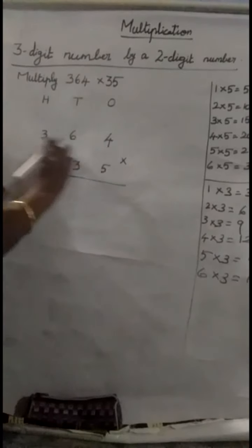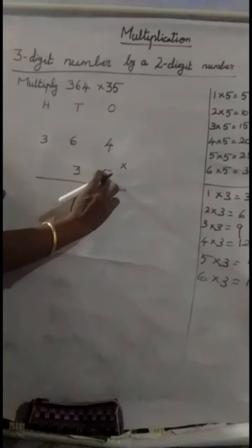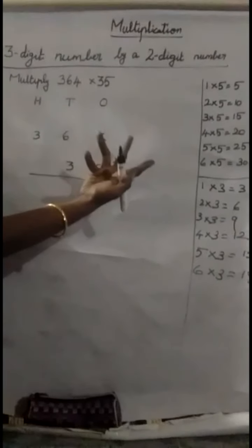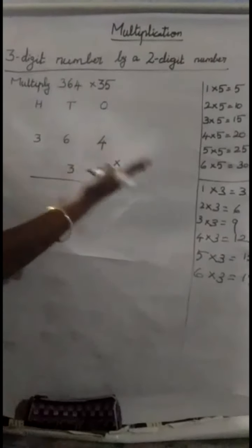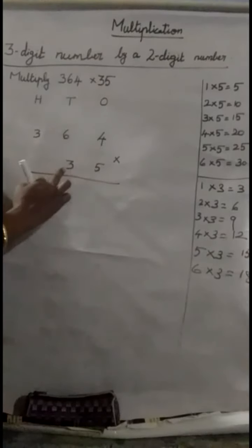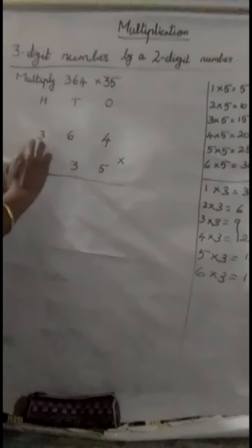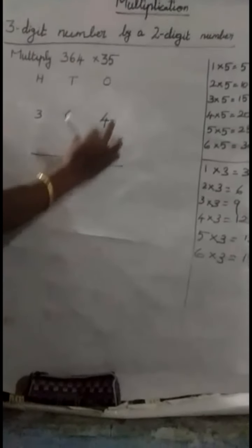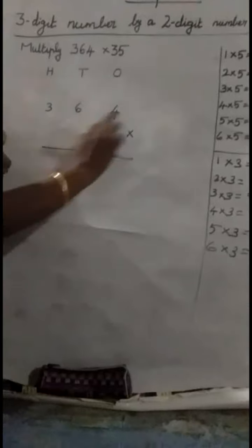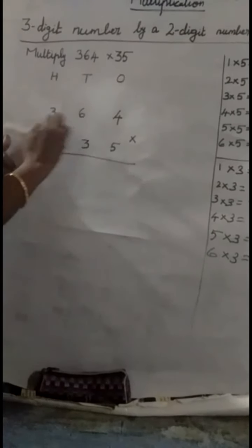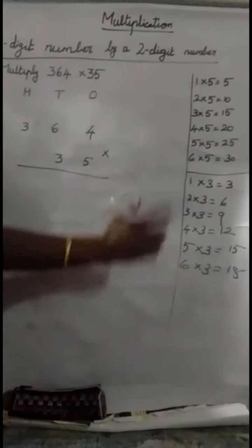See, already you know this is a multiplicand and this is a multiplier. 35 is a multiplier. We don't know 35 tables. So, we can separate the number that is 1s and 10s. First, we should multiply these numbers by 1s multiplier and these 3 numbers by a 10s multiplier. So, we can write the table, 5 table and 3 table.